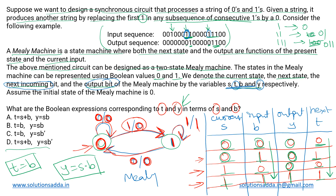The alternative way would have been to create a K-map and check the results, filling out a 2×2 K-map for both t and y respectively. But with just two variables it was simple enough to visualize directly. So for t we got b, and for y we got s·b. That matches with option B, so that will be the correct expressions.